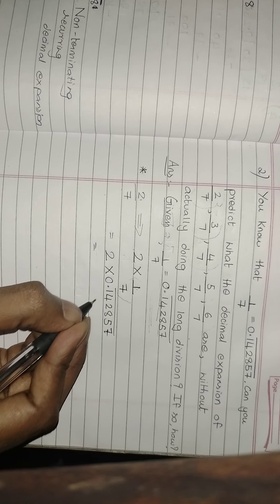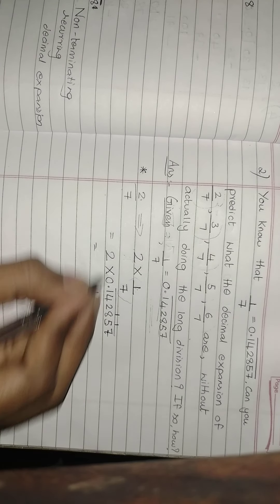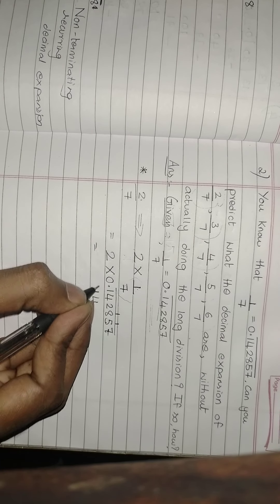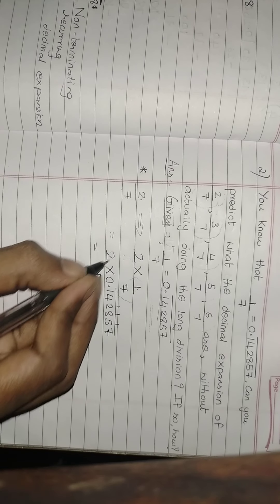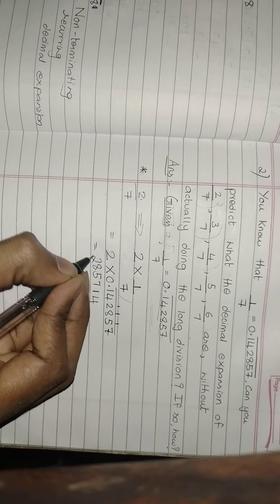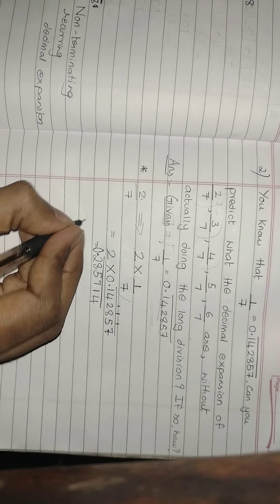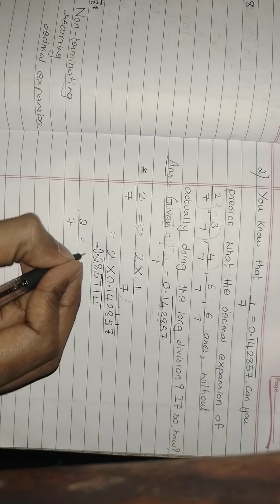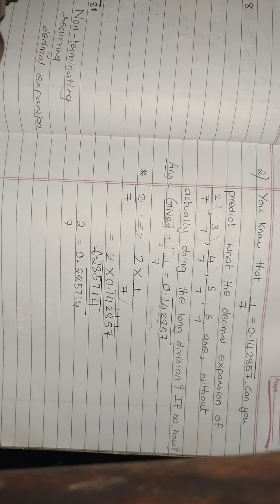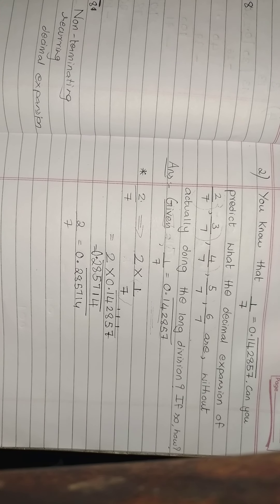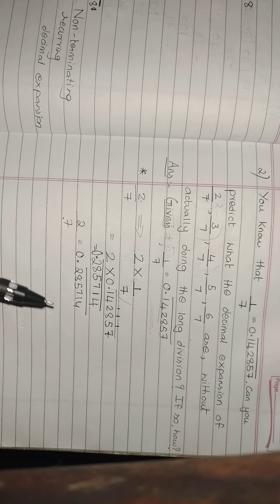2 sevens are 14, carry 1. 2 fives are 10, 11, carry 1. 2 eights are 16, 1, 17, carry 1. 2 twos are 4, 5. 2 fours are 8. 2 ones are 2. 2 zeros are 0 bar. So we got 2 by 7 as 0.285714 bar. This is how we are going to find 2 by 7 decimal form without a long division form.